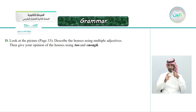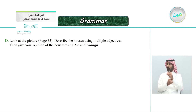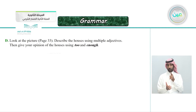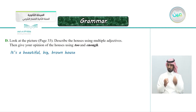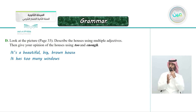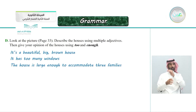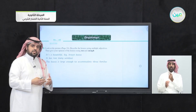Look at the picture on page 33. Describe the houses using multiple adjectives, then give your opinion using 'too' and 'enough.' For example: 'It's a beautiful big brown house.' Also: 'It has too many windows.' And: 'The house is large enough to accommodate three families.' Try to come up with your own sentences using 'enough to' and describe using two or three adjectives. With that, we've reached the end of this lesson.